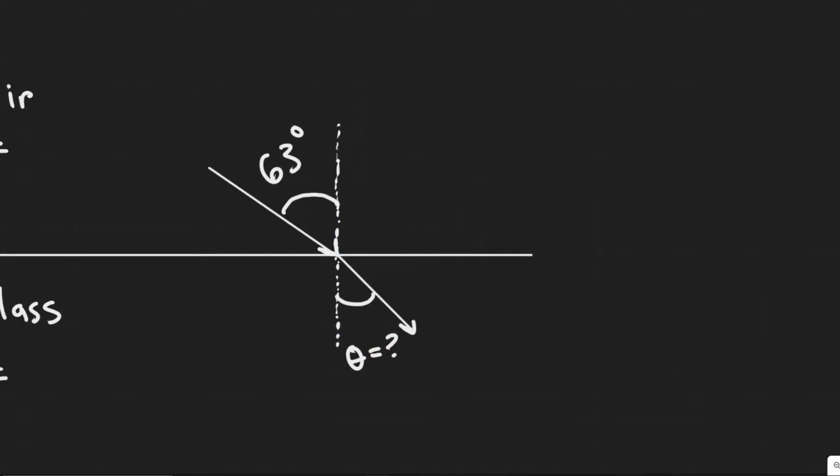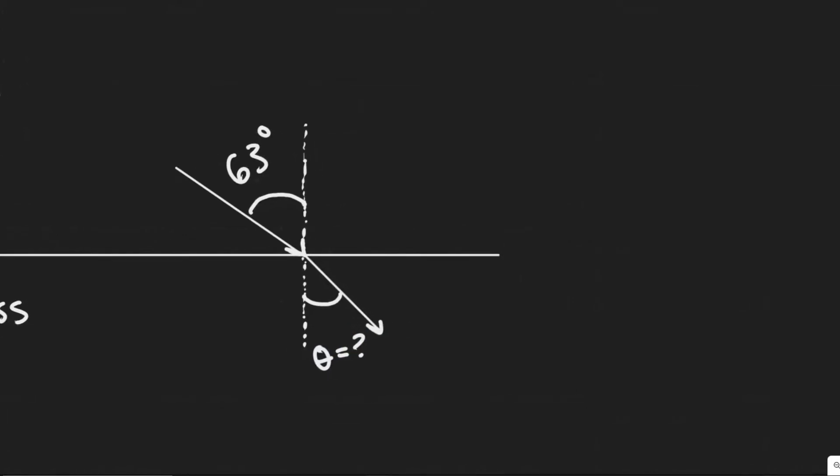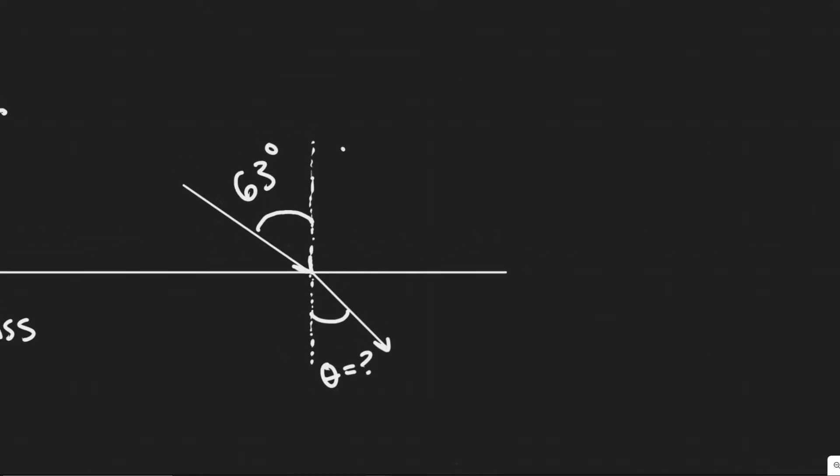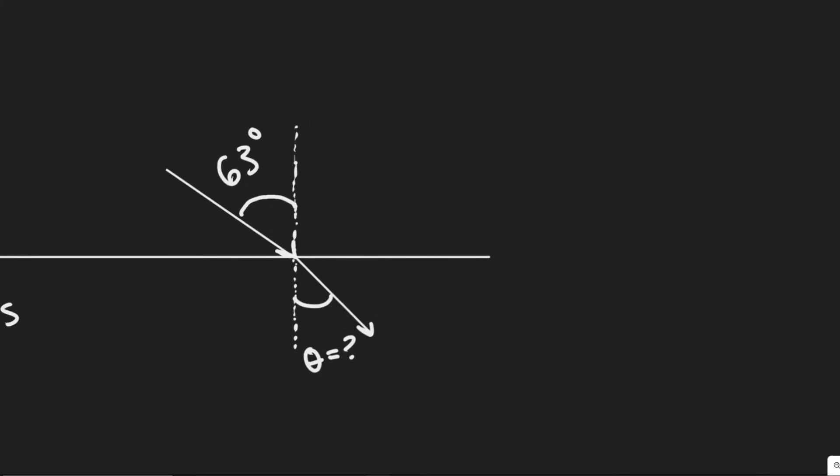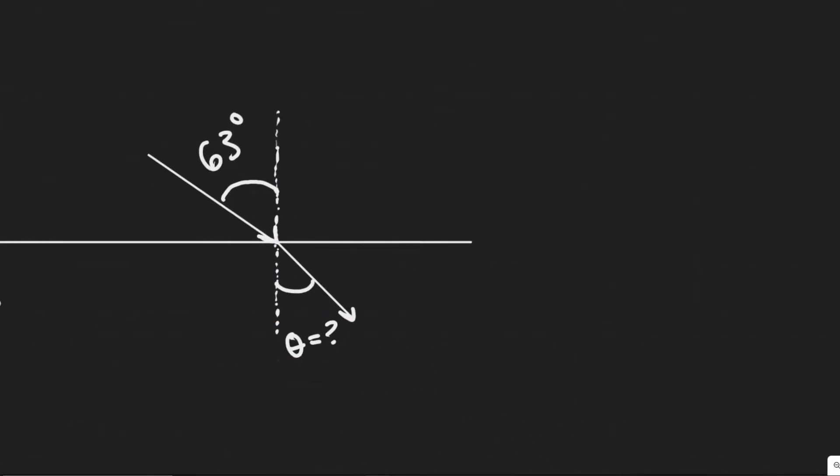It's going to bend a little, which causes this angle to change. So what we're trying to find is this angle here, which we call the angle of refraction. What you have is the angle of incidence, which is this angle where it enters, the angle to the normal.